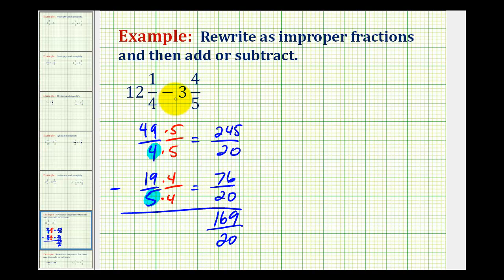So this is the difference of these two mixed numbers, but now we want to convert this back to a mixed number, and since the fraction bar means division, we'll have one hundred sixty-nine divided by twenty. There's eight twenties in one hundred sixty-nine, eight times twenty is one hundred sixty. We have a remainder of nine, so this is equal to eight and nine twentieths.